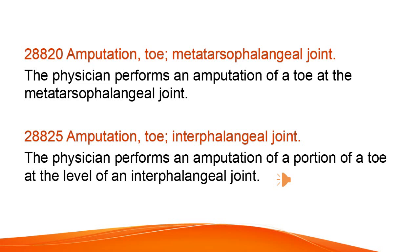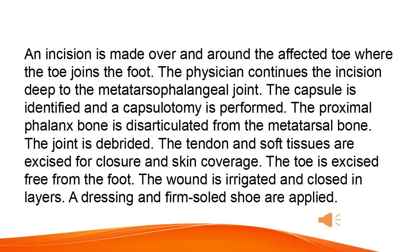Amputation of the toe at the metatarsophalangeal joint: the physician performs an amputation of a toe at the metatarsophalangeal joint. Amputation of the toe at the interphalangeal joint: the physician performs an amputation of a portion of a toe at the level of an interphalangeal joint. An incision is made over and around the affected toe where the toe joins the foot, continued deep to the metatarsophalangeal joint. The capsule is identified and a capsulotomy is performed. The proximal phalanx bone is disarticulated from the metatarsal bone. The joint is debrided. The tendon and soft tissues are excised for closure and skin coverage. The toe is excised free from the foot. The wound is irrigated and closed in layers. A dressing and firm-soled shoe are applied.